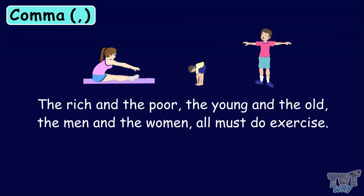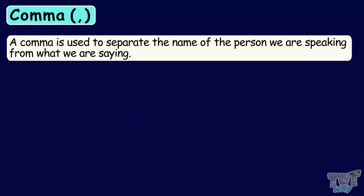A comma is used to separate the name of the person we are speaking from what we are saying. Tina, can you give me a pen? So we give a pause after the noun Tina. Friends, let us start our work. Here also, we give a pause between friends and the rest of the statement.